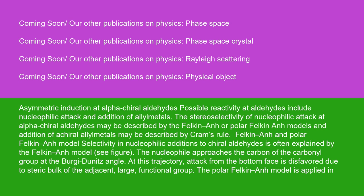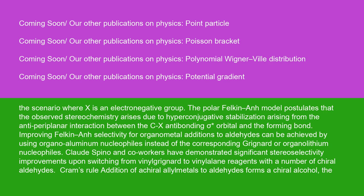Asymmetric induction at alpha-chiral aldehydes: possible reactivity at aldehydes includes nucleophilic attack and addition of allyl metals. The stereoselectivity of nucleophilic attack at alpha-chiral aldehydes may be described by the Felkin-Anh or polar Felkin-Anh models, and addition of chiral allyl metals may be described by Cram's rule. Selectivity in nucleophilic additions to chiral aldehydes is often explained by the Felkin-Anh model. The nucleophile approaches the carbon of the carbonyl group at the Bürgi-Dunitz angle; attack from the bottom face is disfavored due to steric bulk of the adjacent large functional group. The polar Felkin-Anh model is applied in the scenario where X is an electronegative group, postulating that the observed stereochemistry arises due to hyperconjugative stabilization arising from the anti-periplanar interaction between the C-X antibonding σ* orbital and the forming bond.